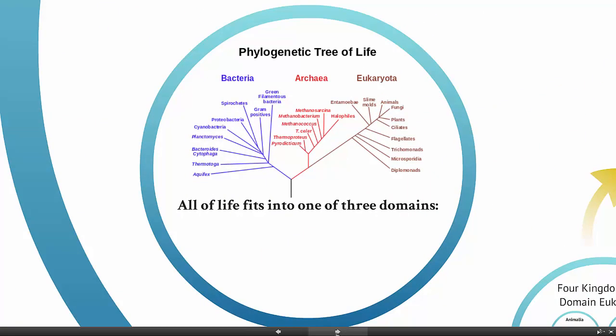This is a phylogeny — a representation of the tree of life as we sort of understand it right now, and it's really undergoing a lot of revisions at this time. It's called a tree because we have this main trunk with branches going off of it representing the different organisms alive today. At each branch point you could imagine an ancestral species — something that doesn't exist anymore that maybe gave rise to the different groups.